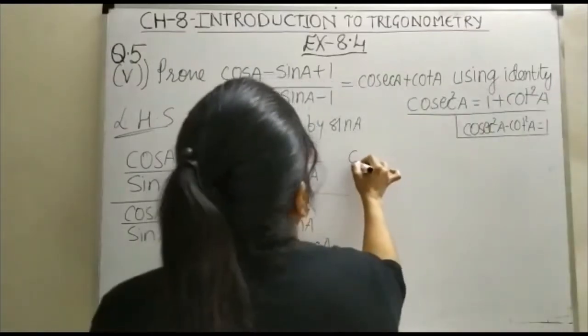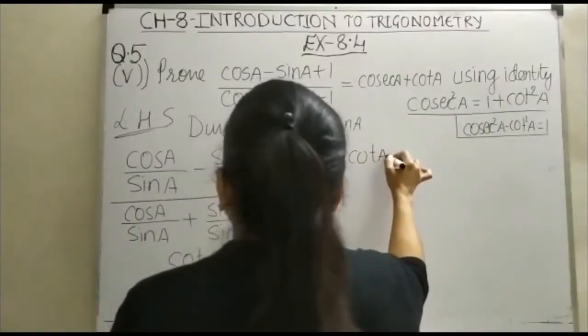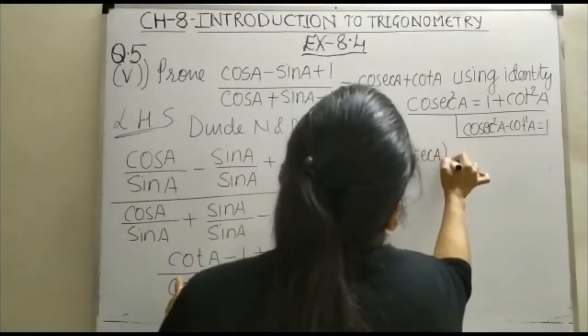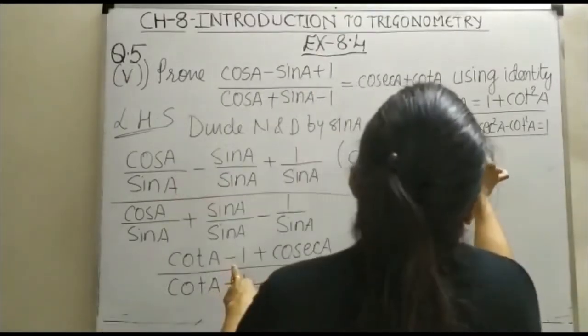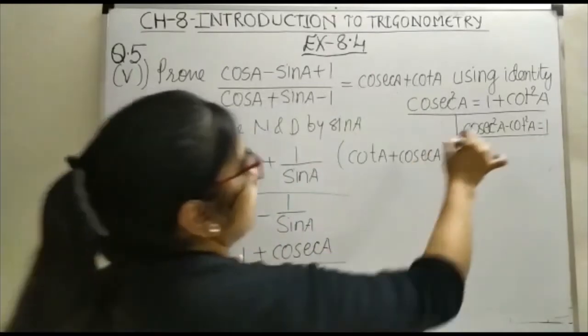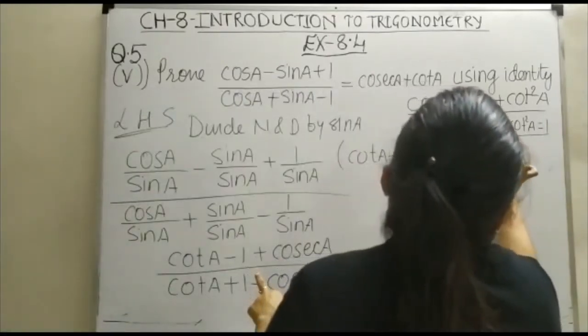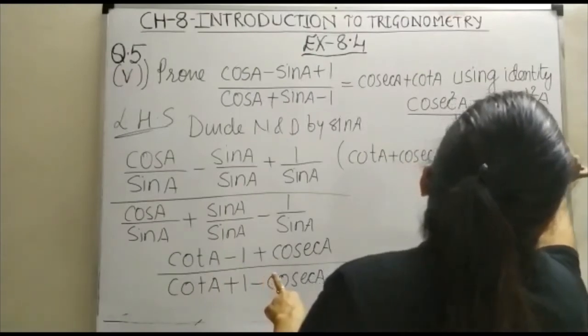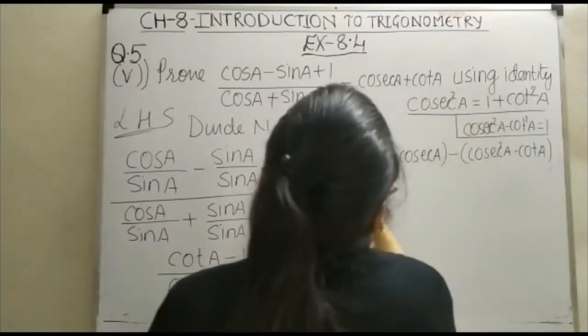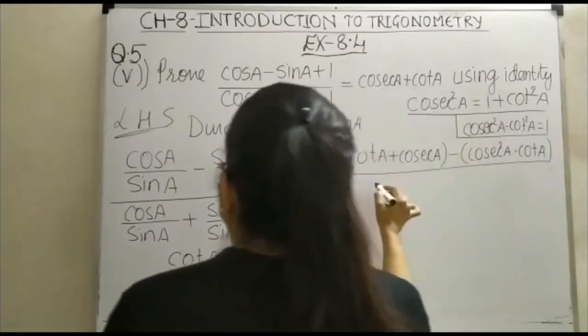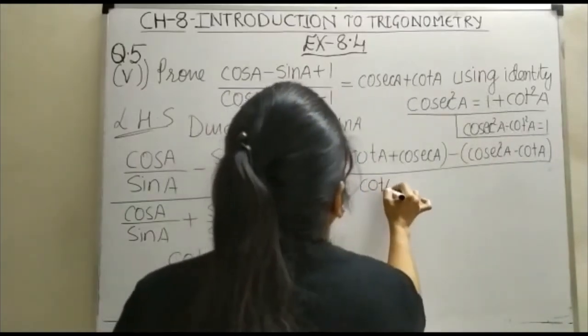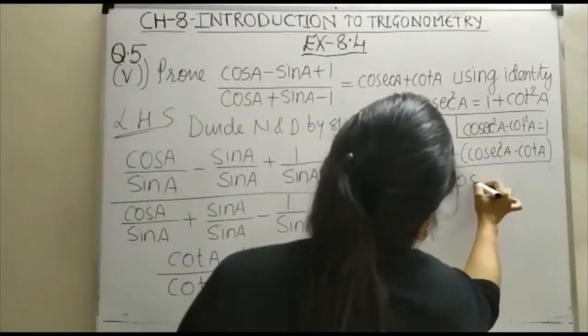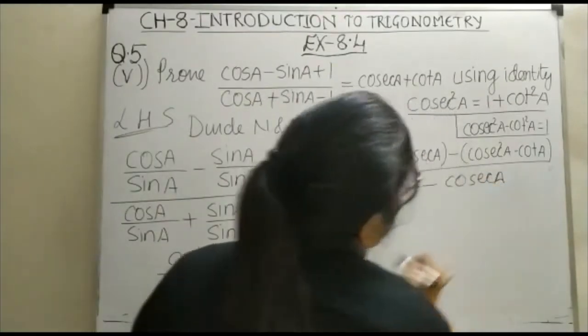So, I will write here cotA plus cosec square A, cosec square A minus 1. Now, this minus 1 is replaced by cosec square A minus cosec square A.